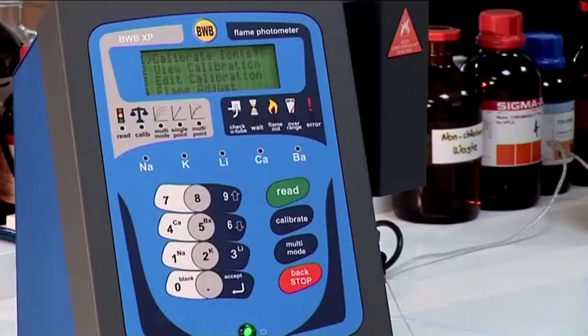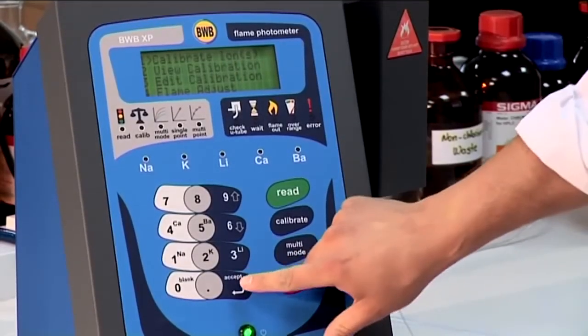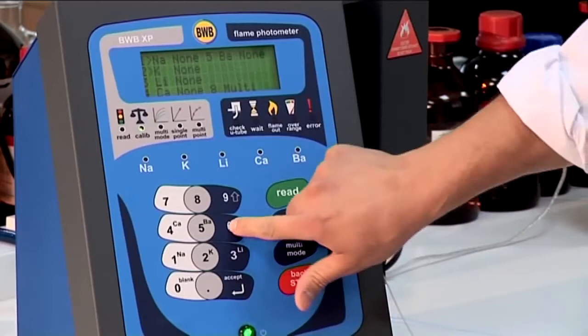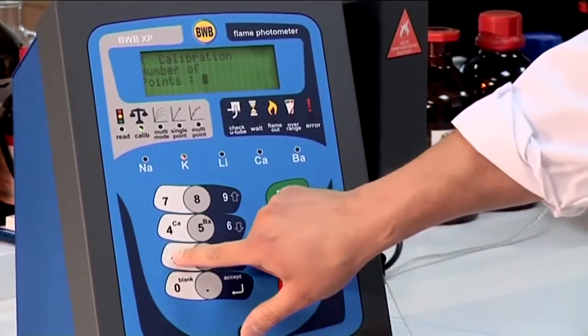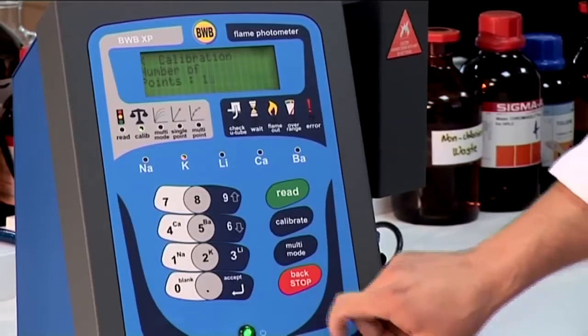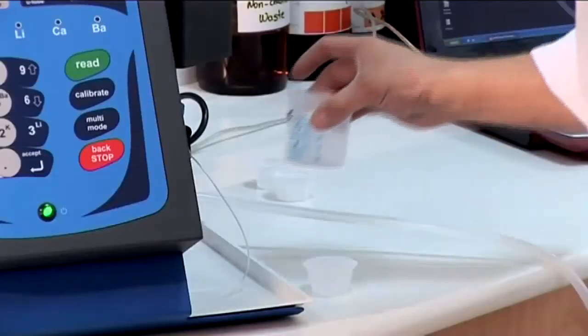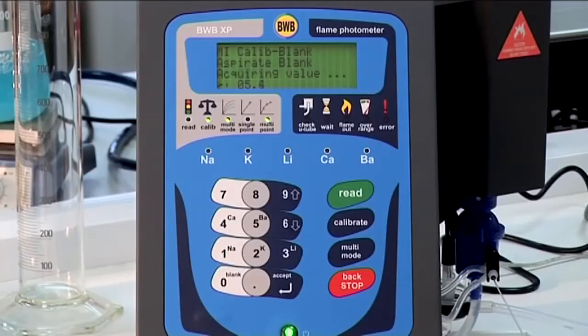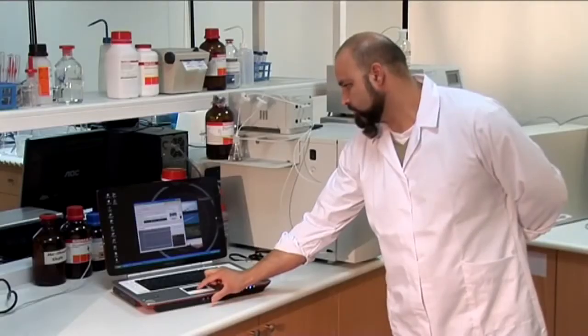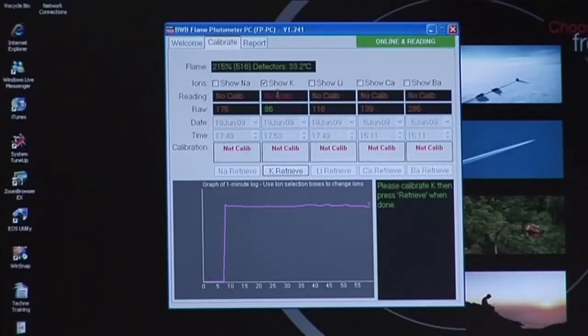The BWB XP will offer prompts as we go through the steps of calibration. From the main menu, choose calibrations, go to calibrate ions, and choose potassium. For a single point calibration, enter 1. Begin by aspirating the blank and press the blank key to begin the process. As the BWB XP is warming up, we recommend you aspirate the blank continuously.